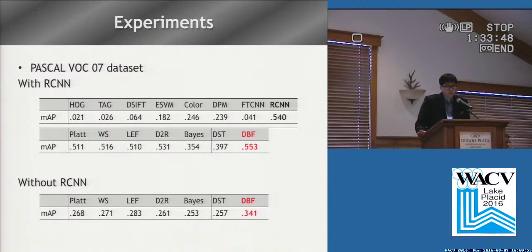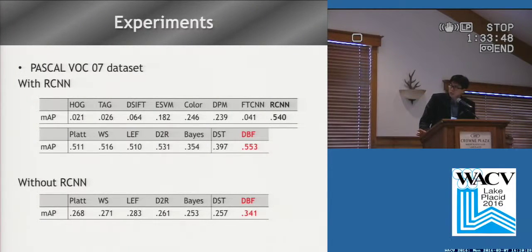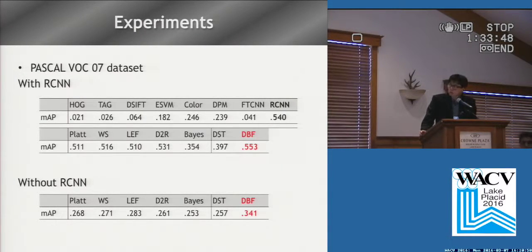We evaluate our proposed DBF on the Pascal VOC 2007 dataset. We employ eight object detection algorithms and implement six fusion approaches as baselines. As the first table shows, DBF outperforms any of the individual detectors as well as any of the fusion approaches. However, the performance gap is not that large because RCNN is dominant in performance compared to other detectors. So we did another evaluation by removing RCNN from the detector pool. As the second table shows, DBF outperforms all methods with significant difference. DBF is better than color-based DPM by 0.1 MAP and also better than the second-best fusion approach by 0.7 MAP.